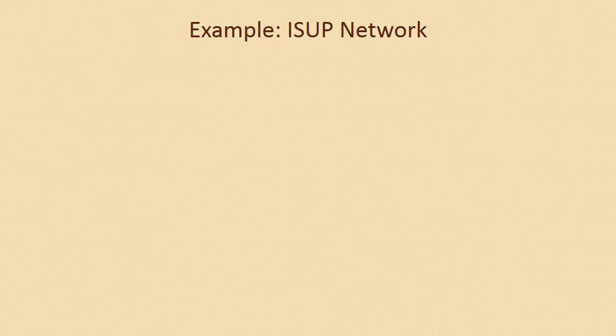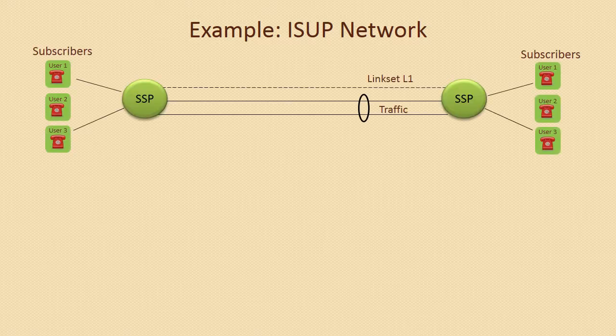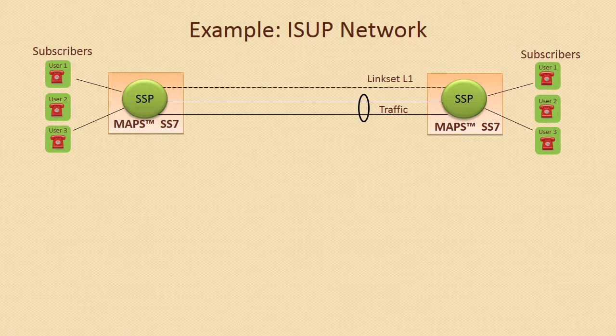To understand testbed profiles, let's take an example of ISUP protocol simulation. Shown here is a general SS7 network using ISUP signaling to communicate between two SSPs. To simulate an SSP entity, the first step is to configure the SSP entity with point codes, end-points, link sets, and other relevant parameters.